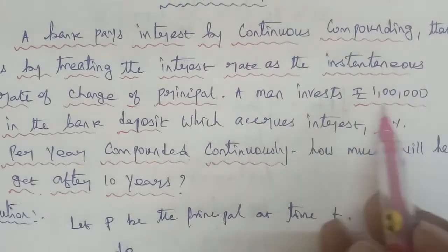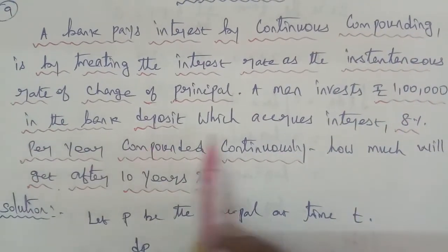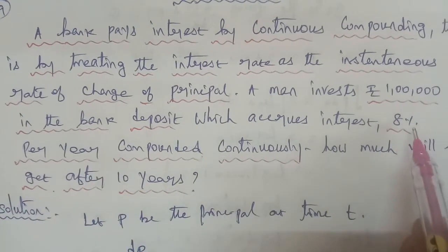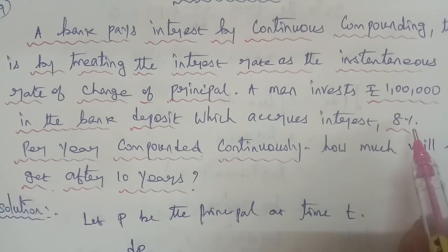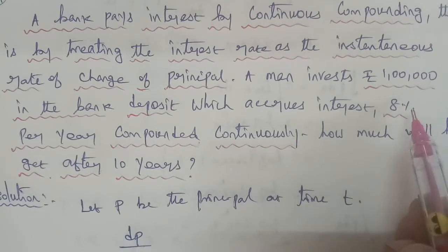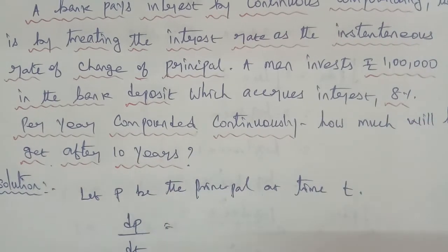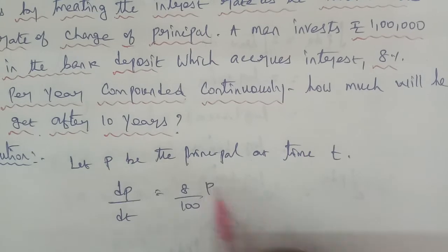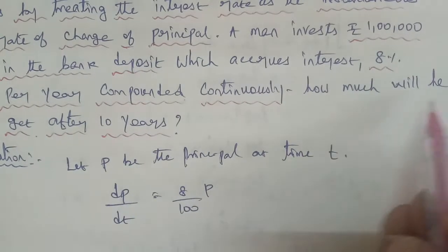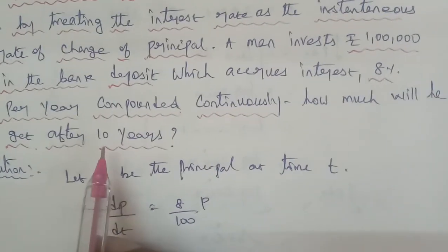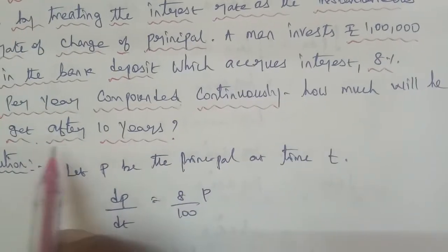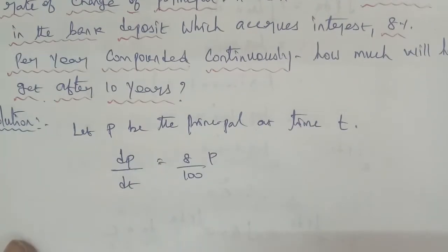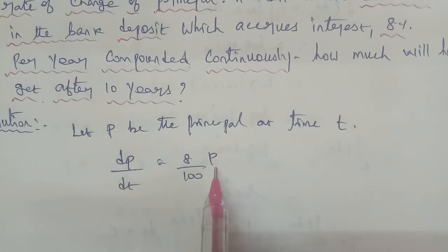A man invests Rs. 1 lakh in the bank deposit which earns interest at 8% per year. So interest at 8% per year means dP/dt is equal to 8/100 × P, that is 0.08P. Question 1: How much will he get after 10 years? So dP/dt = 8/100 × P.